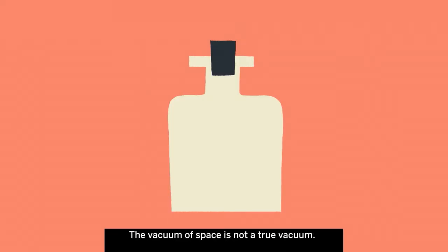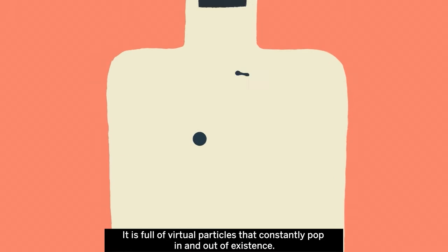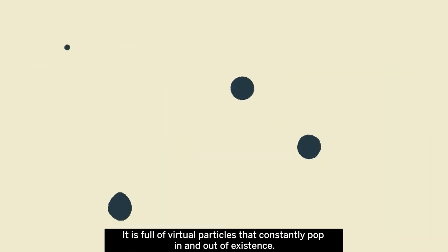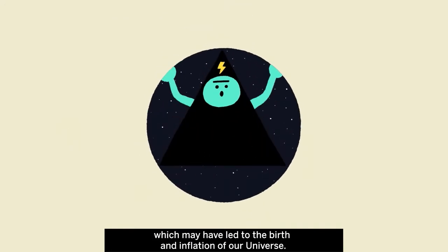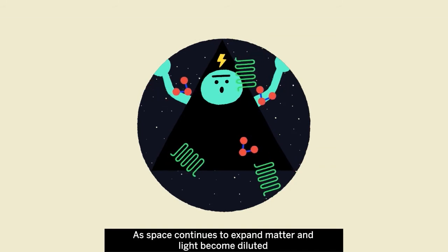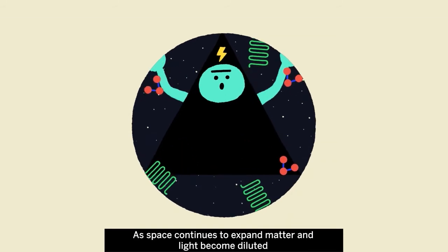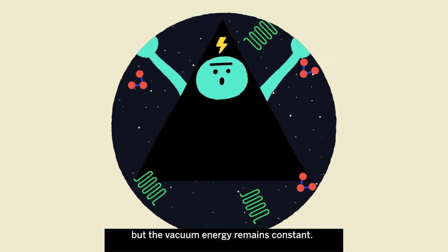The vacuum of space is not a true vacuum. It's full of virtual particles that constantly pop in and out of existence. The vacuum of space has its own energy, which may have led to the birth and inflation of our universe. As space continues to expand, matter and light become diluted, but the vacuum energy remains constant.